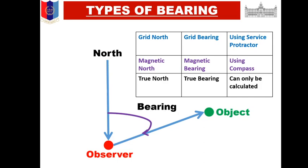Third is Grid North. Whenever we talk about grid, we must be clear that we are talking about the map (manchitra). The north shown in the map — the black lines in the map that indicate north — that is called Grid North. So north direction is of three types: first, Grid North which is on the map; second, Magnetic North which we see with the compass; third, True North which actually exists on the ground or terrain.